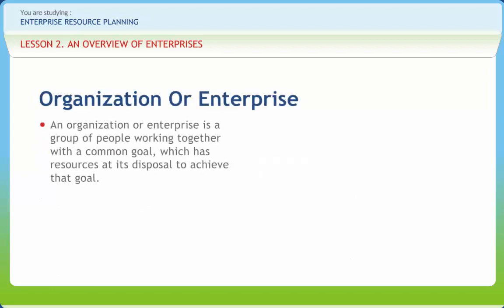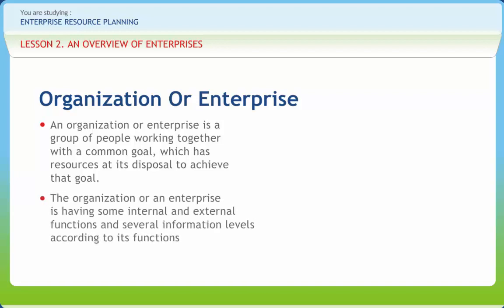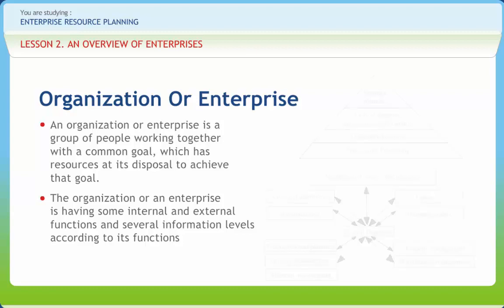An organization or enterprise is a group of people working together with a common goal, which has resources at its disposal to achieve that goal. The organization or enterprise has some internal and external functions and several information levels according to its functions. The four levels of information system that exist in a business are: operational transaction processing — lower level; tactical planning and management control — middle level; and strategic planning — top level.